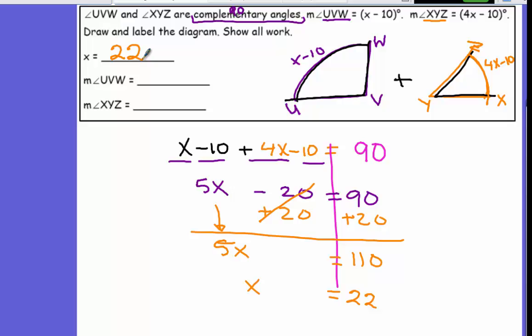Then you take the 22, you plug back into the X and solve. So this right here is 22 minus 10, which is 12, so angle UVW is 12 degrees. The other angle is 4 times 22 minus 10, which is 78 degrees.